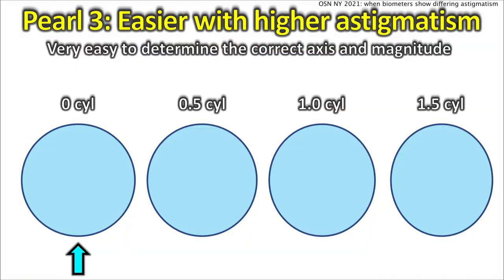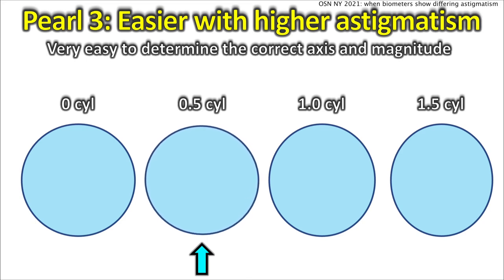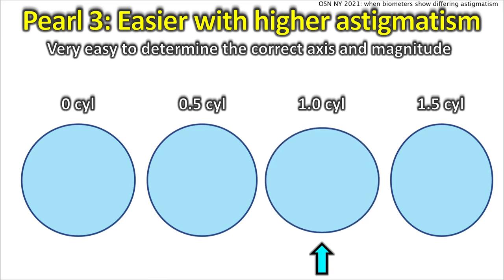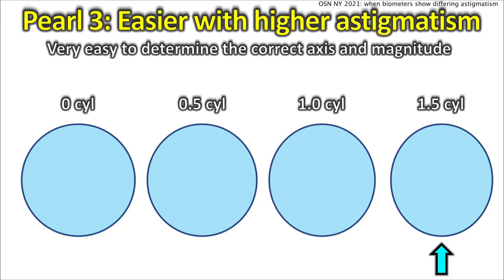Pearl three: it's easier with higher astigmatism. Look at that arrow — that's an eye with zero astigmatism. If you rotate it, nothing really happens because it's perfectly spherical. The next one is a half diopter of astigmatism — as we rotate it you can barely tell it's a little out of round. At one diopter it's even more obvious — you can see where the circle has been squeezed.